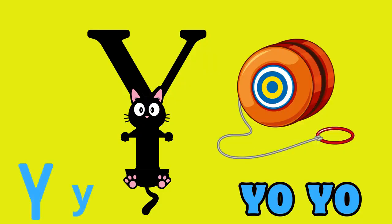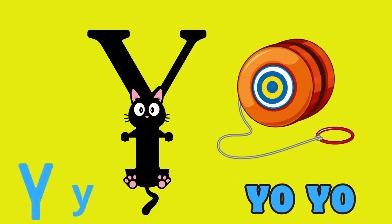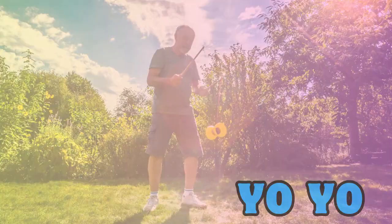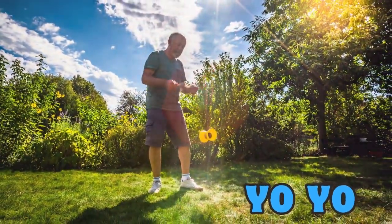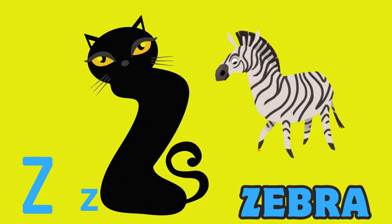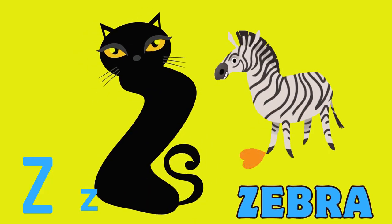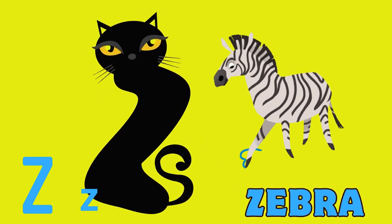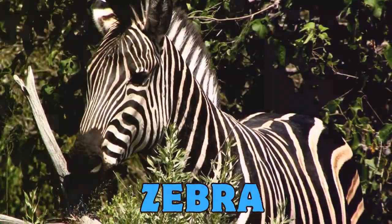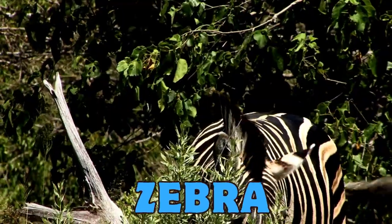Y is for Yoyo. Yoyo. Yoyo. Y. Yoyo. Z is for Zebra. Z. Zebra. Z. Zebra. Z. Zebra. Z. Zebra. Z.